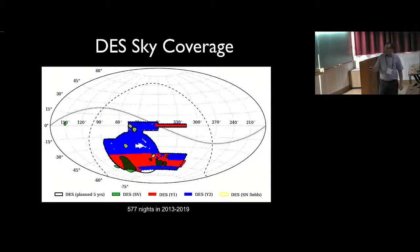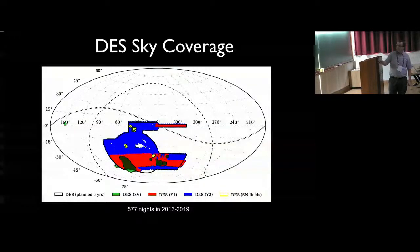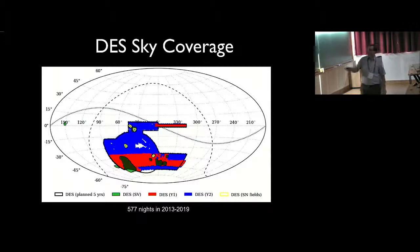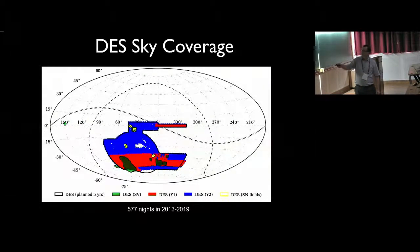For the moment, we have results and analyzed results from the science verification data, which is in green. You might have seen papers on science verification data. But more recently, on the year one data release, which is the red region here, as well as some of the deep field supernova fields, which are shown here in lighter green color. Eventually, the survey will cover all this region.